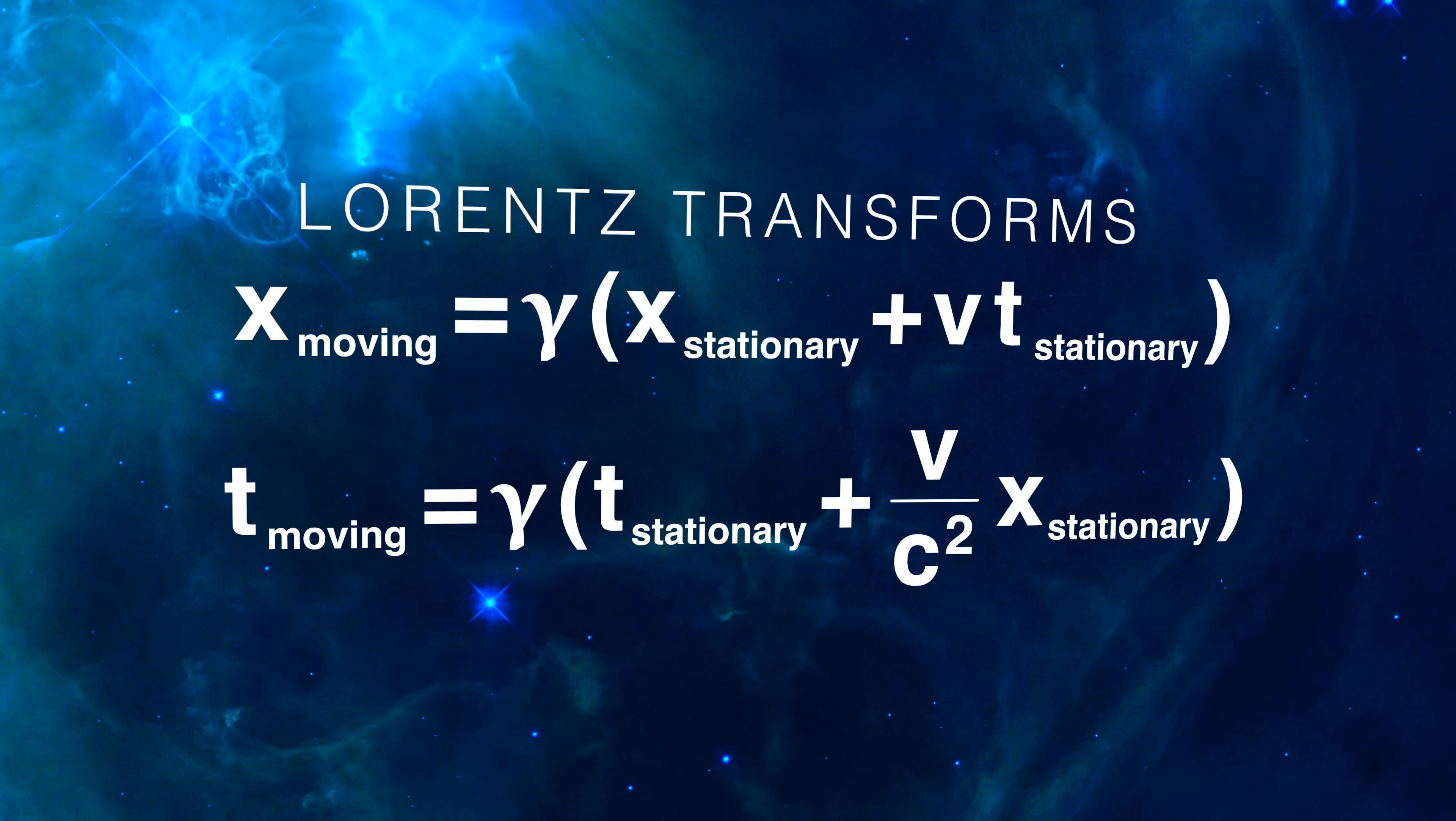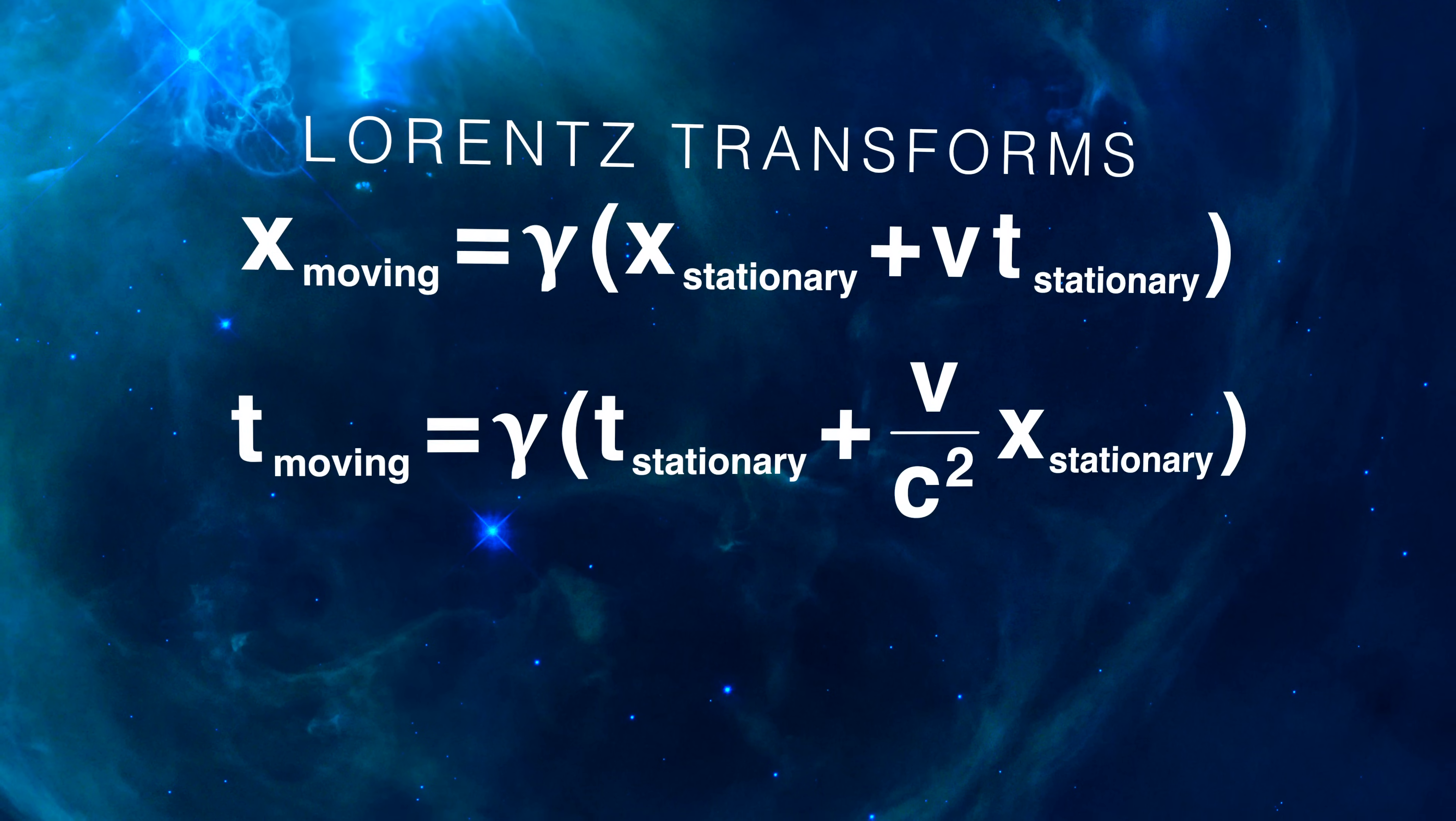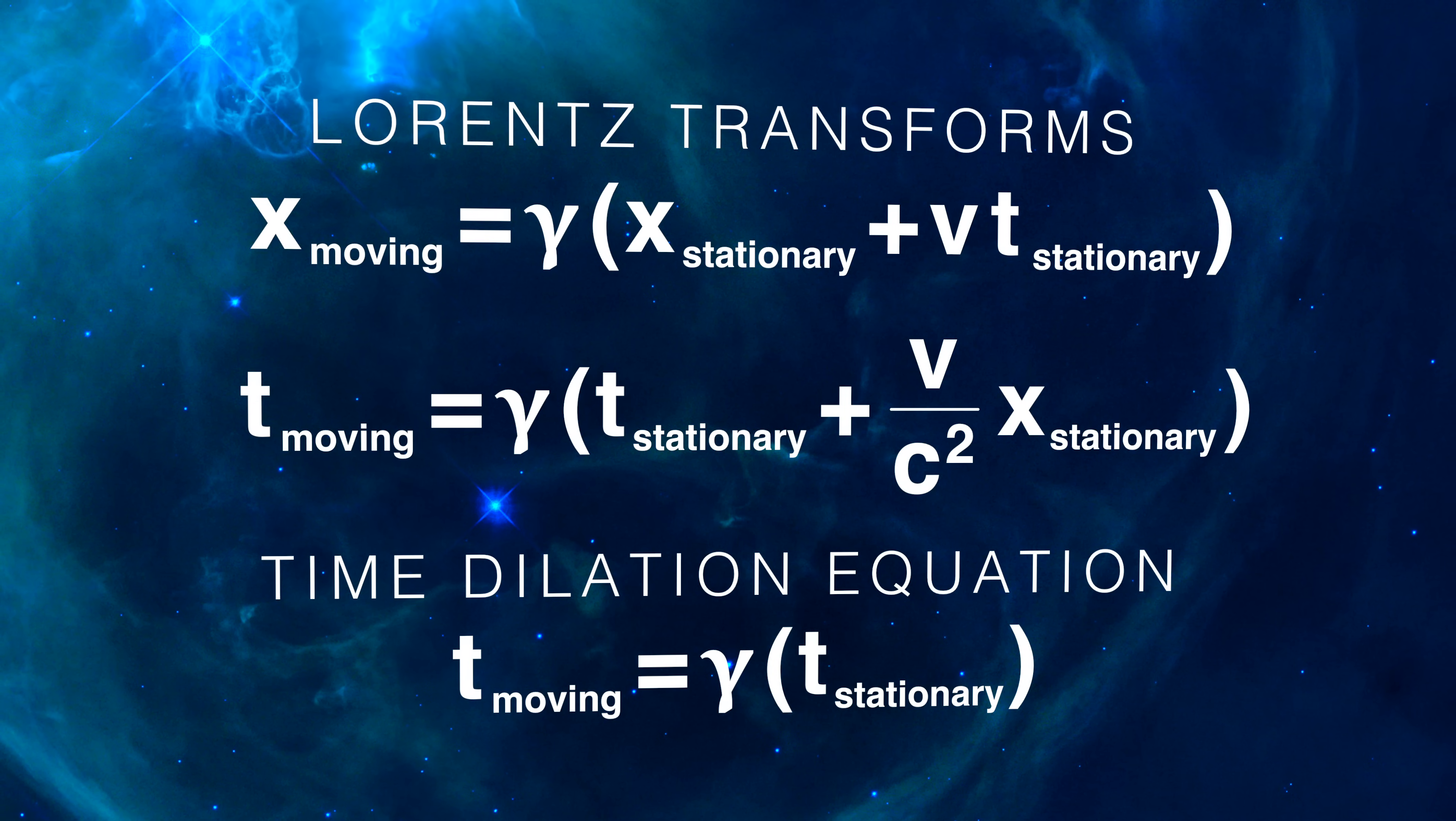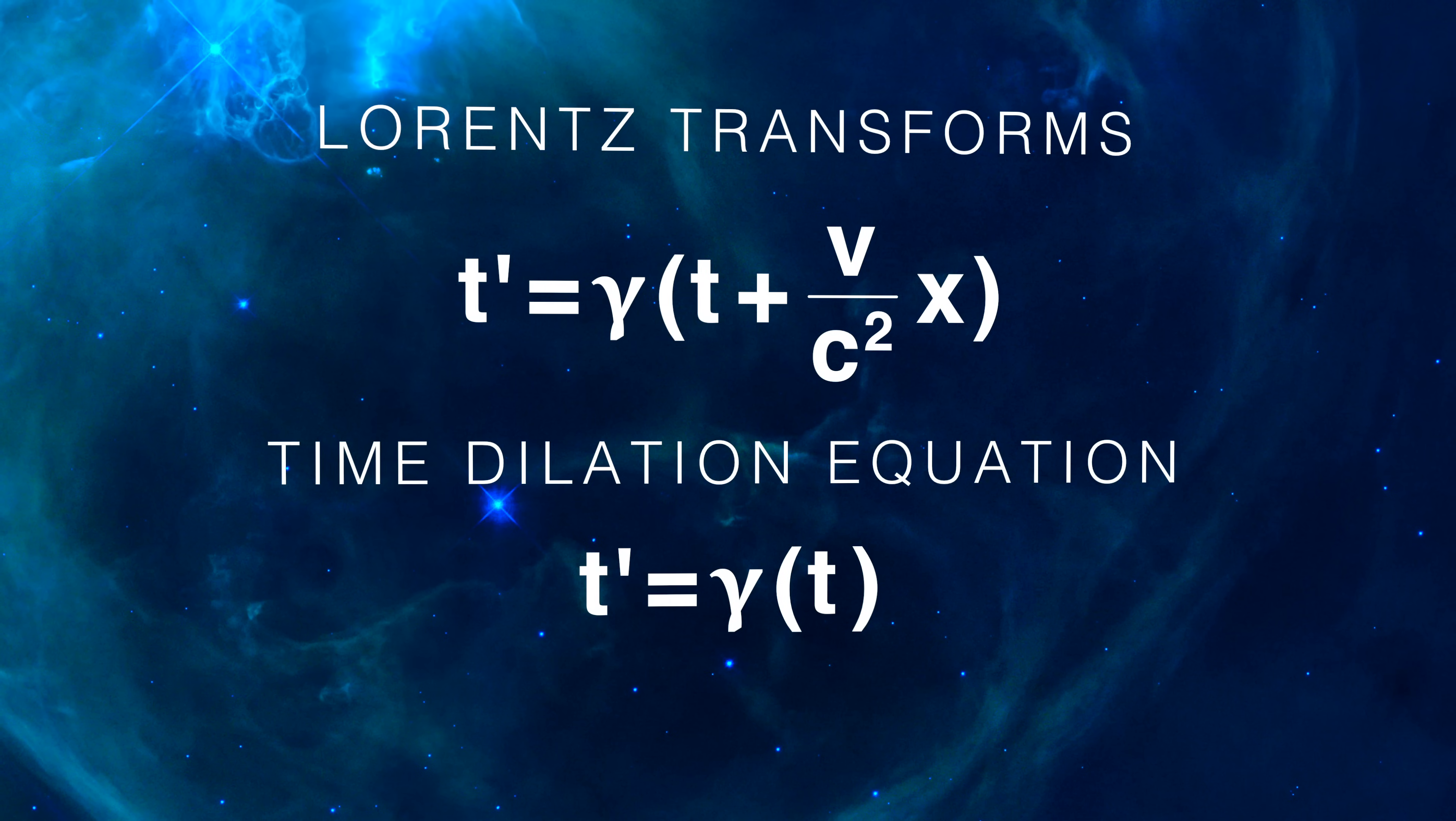So begin by putting up the most basic and general equations of relativity. These are called the Lorentz transforms, and they show how you can translate between the point of view of two observers who are moving with respect to one another. Let's put up the time dilation equation I mentioned before as well. Notice that the Lorentz transforms have both a position and time equation. We're not interested in the position one here, so we'll get rid of it. And we'll change the symbols for the time one so it looks more like you usually see in the textbooks.